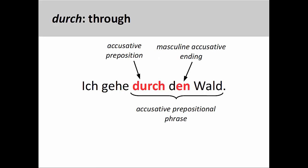As we have seen in an earlier presentation, durch means 'through,' as in 'Ich gehe durch den Wald' — I go through the forest. Again, the masculine accusative ending on the definite article reveals that everything between the preposition and its object is in the accusative case.